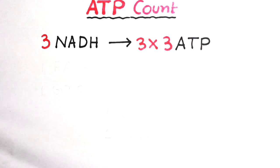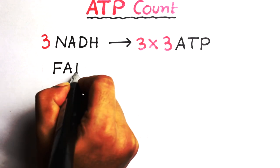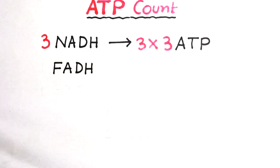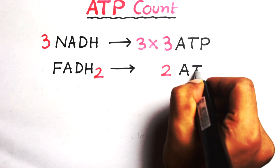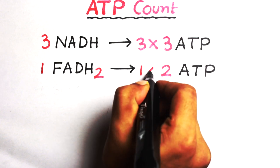Here every number you can see is three. The next is FADH2, which can produce two ATP, and only one FADH2 is produced in one cycle, so total ATP production is two.